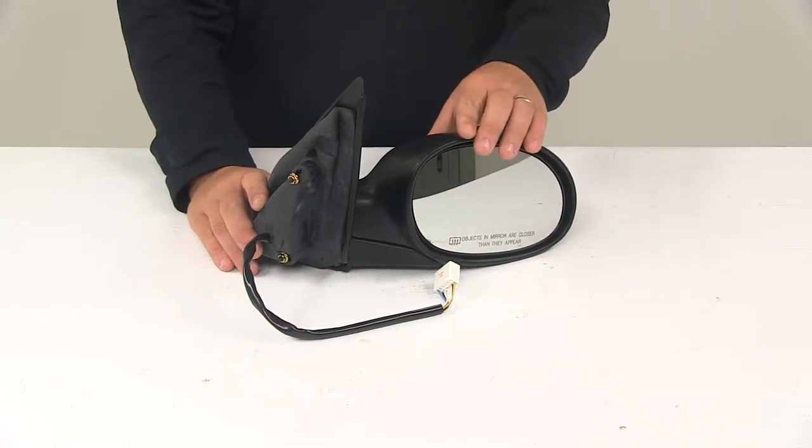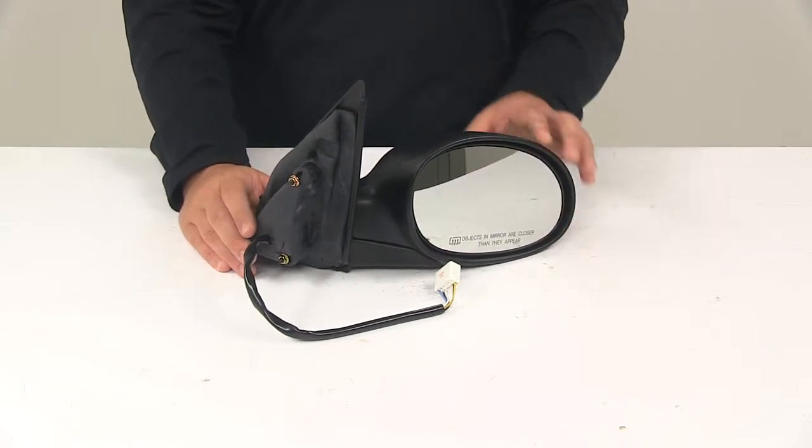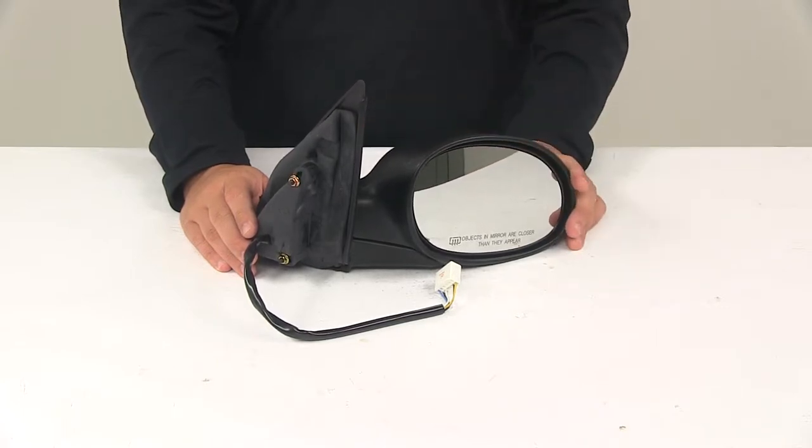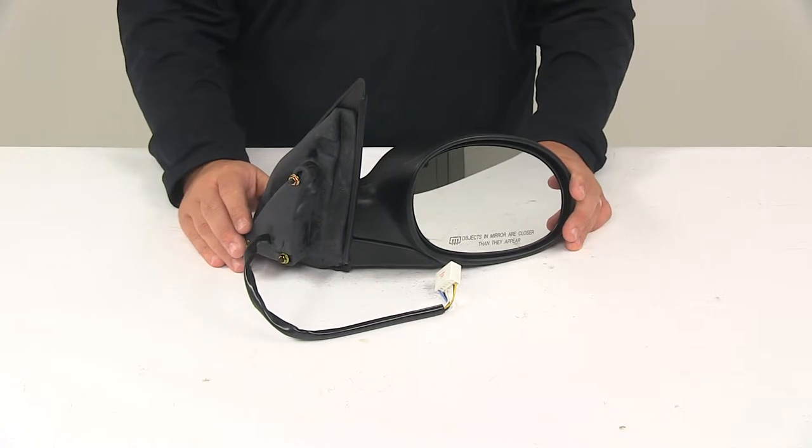Now this is an OE grade convex glass with first surface plating to reflect clear images. That means that the front of the glass is plated with a reflective chrome and then the convex lens provides a nice wide angle view that really helps reduce blind spots.